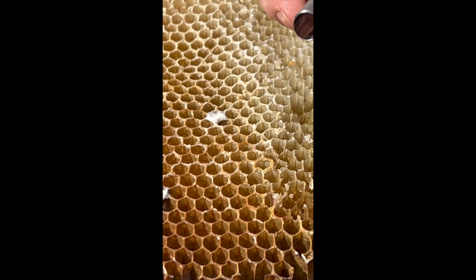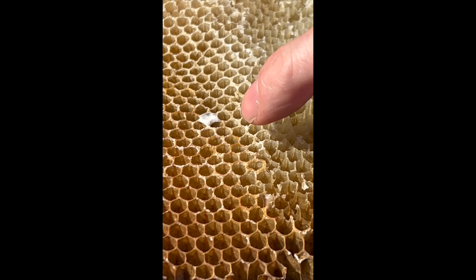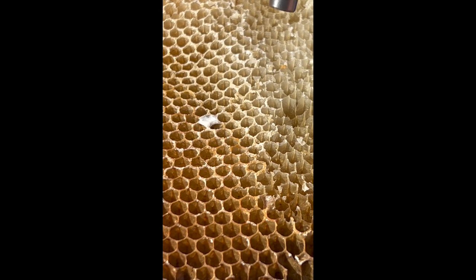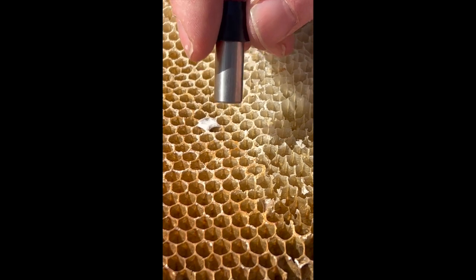The way cell punching works is with the sharp end. We drive that first. You select larvae of the correct age, which is less than 24 hours old, sort of less than a C shape.